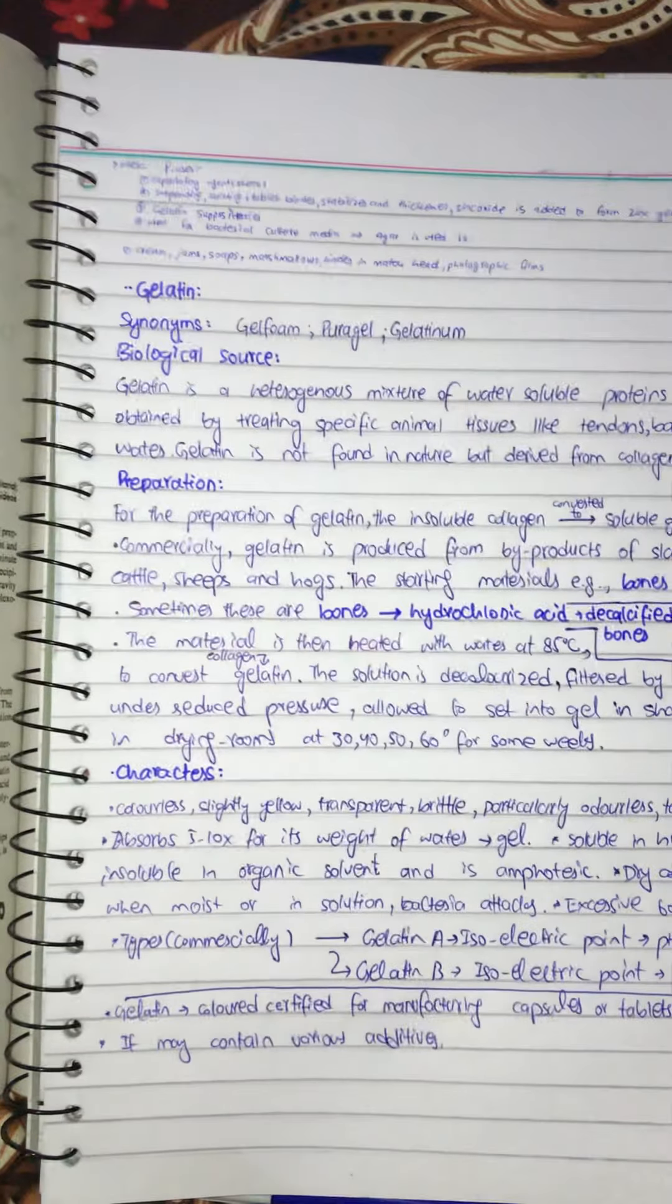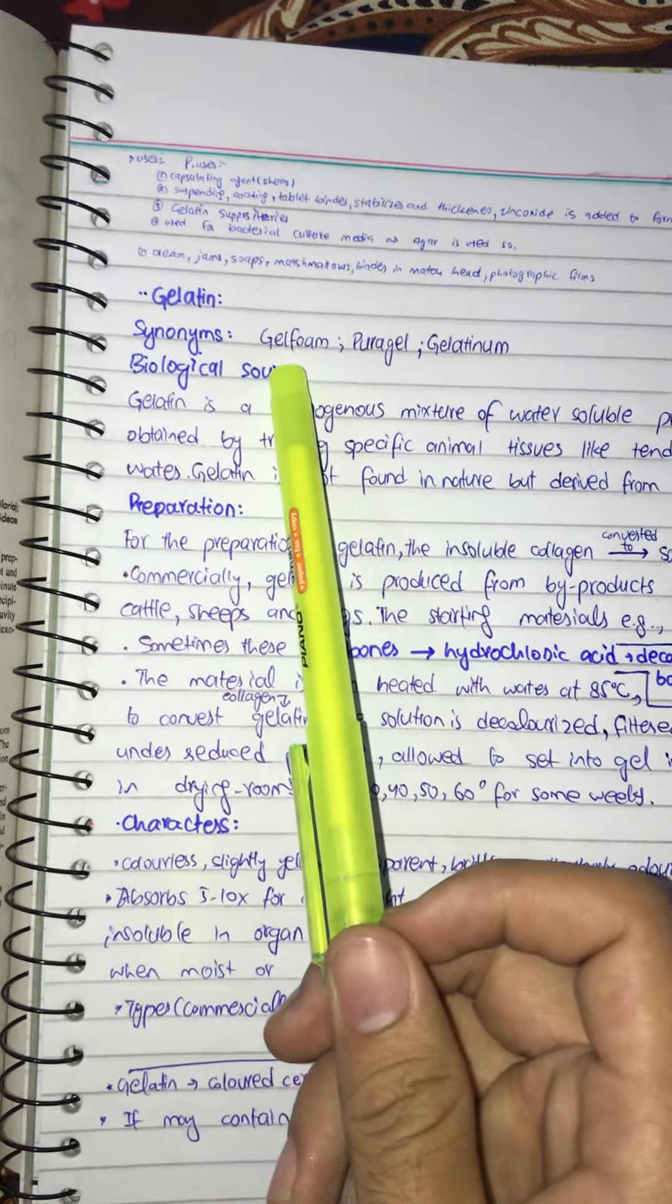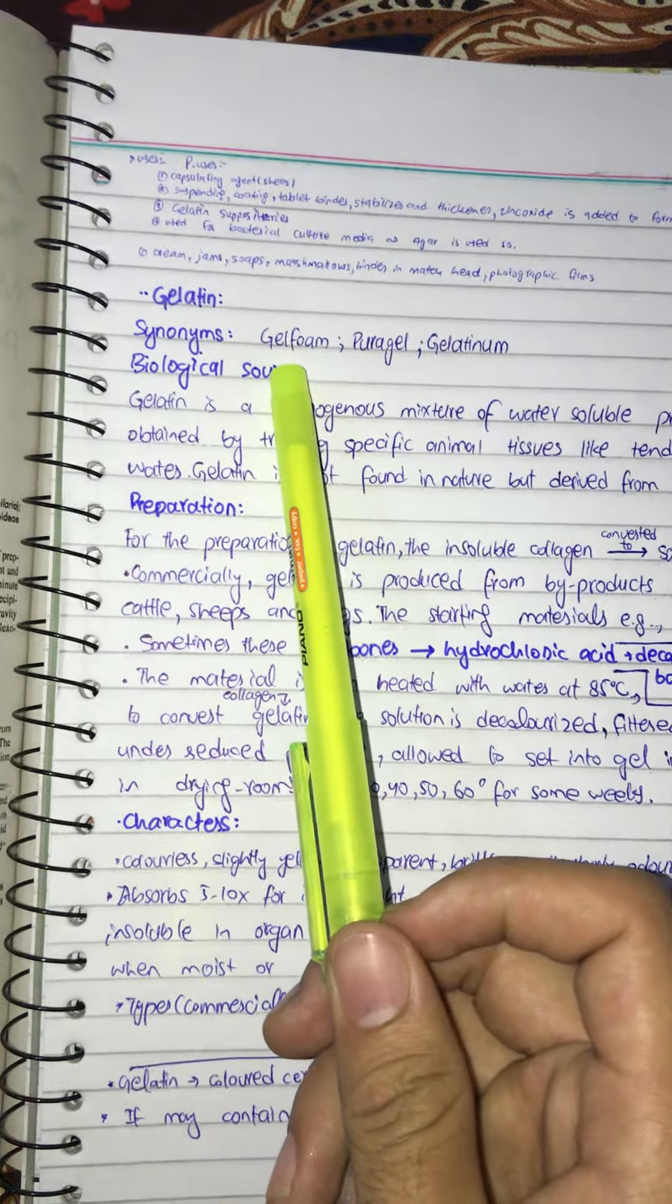In this video I shall read about gelatin, and in this part, because it is the first part, I shall involve the synonyms, biological sources, preparation and characteristics. For the synonyms we have gel form, pure gel, and gelatinum.